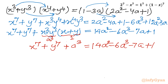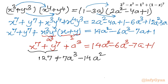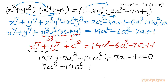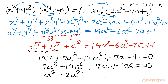So x⁷ plus y⁷ plus a³ equals 14a² minus 6a³ minus 7a plus 1. Since x⁷ plus y⁷ equals 127, substituting and rearranging all terms to the left: 7a³ minus 14a² plus 7a plus 126 equal to 0. Dividing through by 7 gives the cubic equation: a³ minus 2a² plus a plus 18 equal to 0.